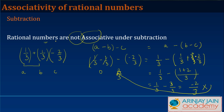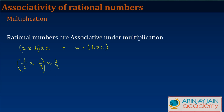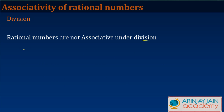Third, are rational numbers associative under multiplication? That is, does (a × b) × c equal a × (b × c)? Let a = 1/3, b = 1/3, c = 2/3. Left side: (1/3 × 1/3) × 2/3 = 1/9 × 2/3 = 2/27. Right side: 1/3 × (1/3 × 2/3) = 1/3 × 2/9 = 2/27. Both sides are equal, so rational numbers are associative under multiplication.